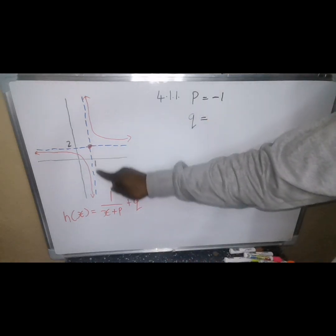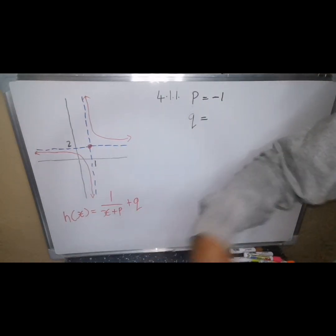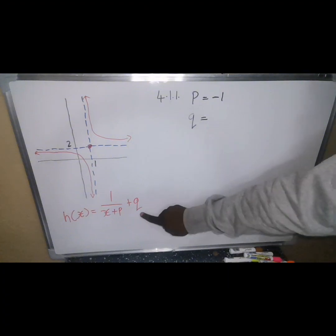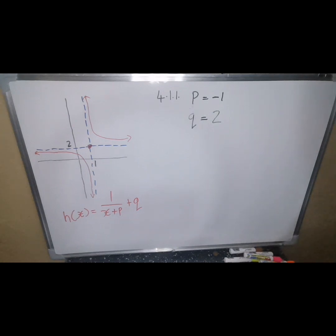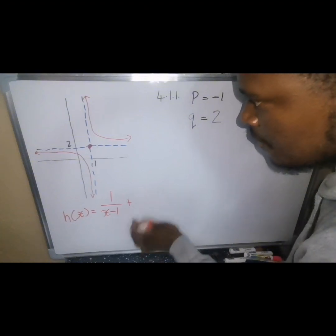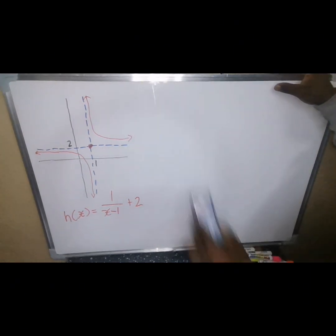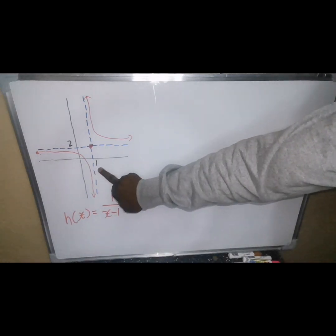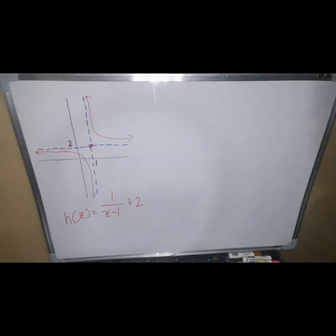The value of p changes sign when it comes inside the bracket — from positive to negative and vice versa. The value of q remains the same as positive 2 because q is our horizontal asymptote. So from the equation it becomes minus 1 and plus 2. The value of q always stays the same and does not change sign; only p changes sign.